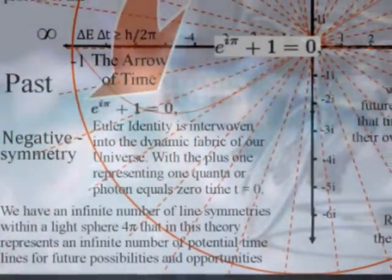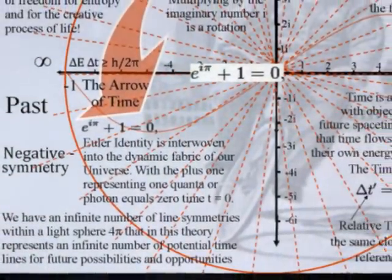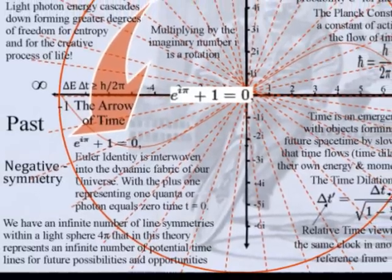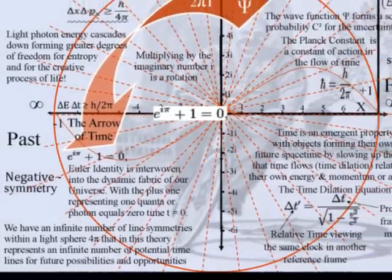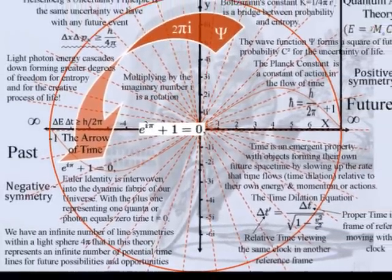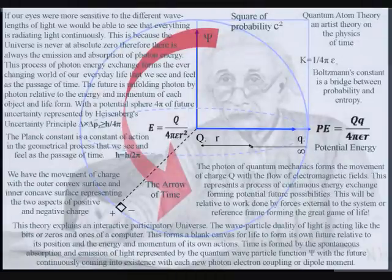We have an infinite number of line symmetries within a sphere, and in this theory represents an infinite number of time lines for potential future possibilities and opportunities. Within such a theory, creation is in the hand and eye of the beholder.